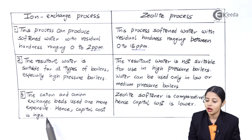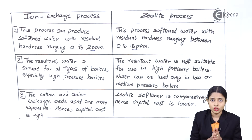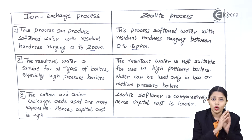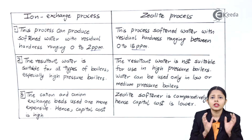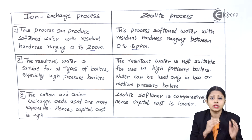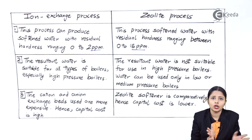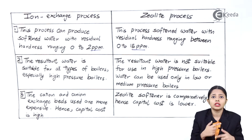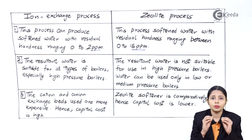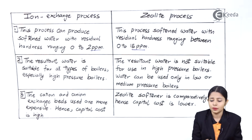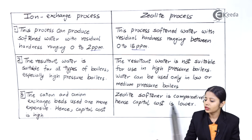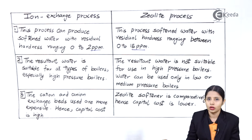Third point — In the ion exchange process, the cation and anion exchange beds used are more expensive, hence the capital cost is high. We have to keep refilling these cation and anion beds, which requires ongoing expenditure, making this process a bit more expensive. In contrast, the zeolite softener is comparatively cheap, hence the capital cost is lower.